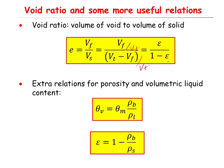Using these definitions, you can derive some extra equations. For example, you can show that theta v, the volumetric water content, equals gravimetric water content theta m times bulk density divided by liquid density. Or you can show that porosity equals one minus bulk density divided by the density of the solid phase.